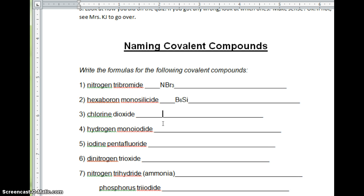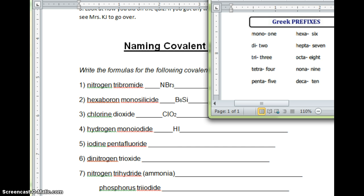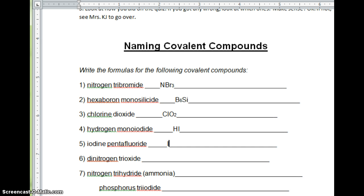What about chlorine dioxide? ClO2. Dioxide means I'm going to have two oxygens. What about hydrogen monoiodide? Hydrogen. Mono means one. Iodide. HI. That's it. HI is hydrogen monoiodide. Iodine pentafluoride. Hit the pause button. What do you think this formula would be? Iodine, fluorine, and then I have five of them because penta means five. So it's IF5.